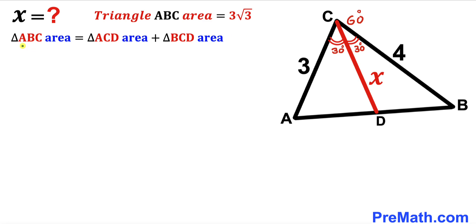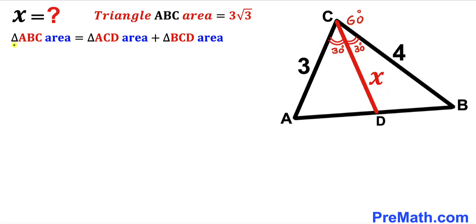Now let's observe that the area of the big triangle ABC equals the sum of the two individual areas: the area of triangle ACD plus the area of triangle BCD. The area of triangle ABC has been given to us as 3 times square root of 3.